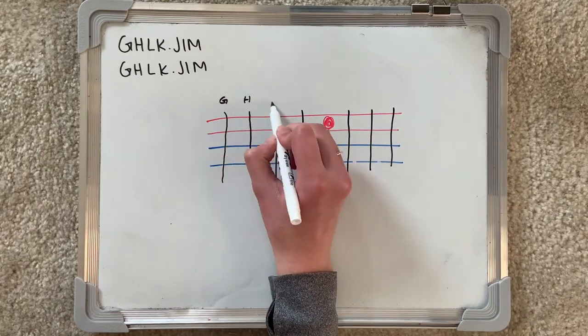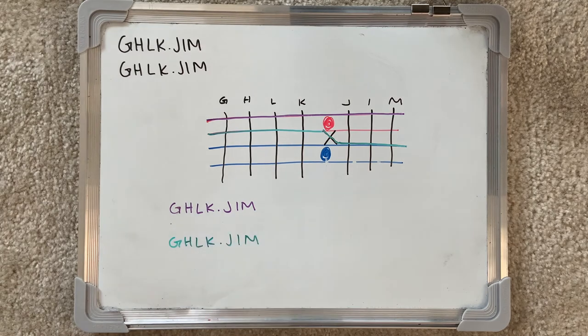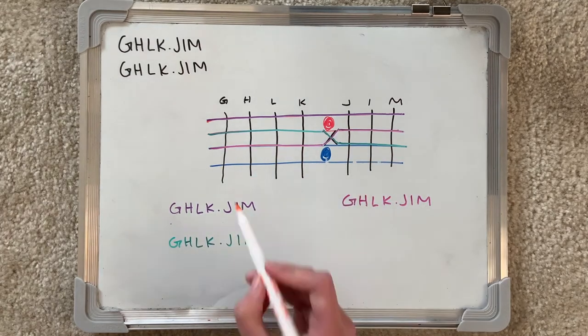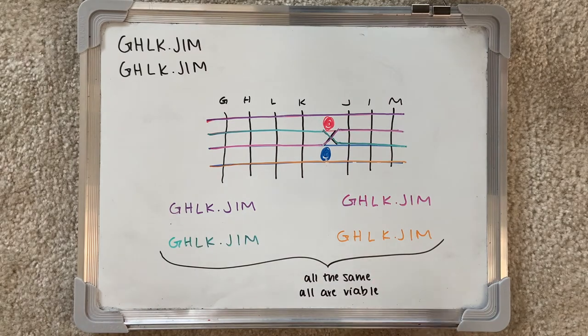If there were to be crossing over between regions J and K, the recombination event would result in the chromosomes being highlighted here. All four of the resulting chromosomes are identical in order, and this means that all four pink jellyfish gametes are viable.